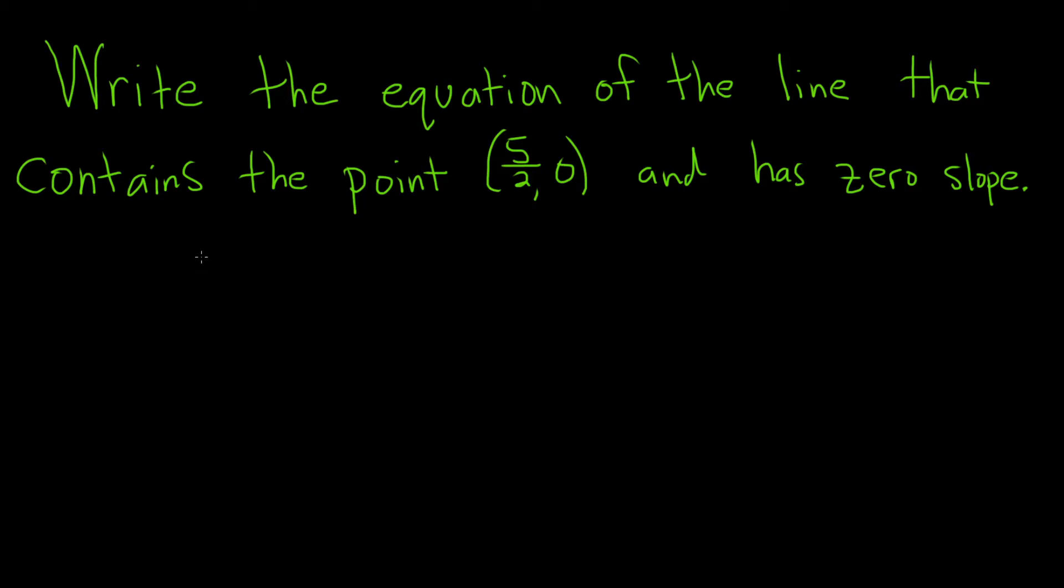Write the equation of the line that contains the point 5 halves comma 0 and has zero slope. Let's go ahead and work through it carefully.